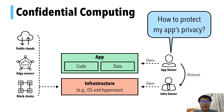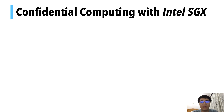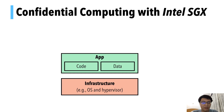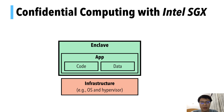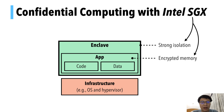Our story begins with the paradigm of confidential computing. The concept is that users deploy applications on untrusted infrastructure like public clouds, and demand protecting the privacy of their applications. One way to realize confidential computing is through Intel SGX. SGX enables users to create private regions of memory named enclaves, which are guaranteed by the CPU to have strong isolation and encrypted memory. Thus, enclaves are protected from software and hardware attacks from infrastructure.